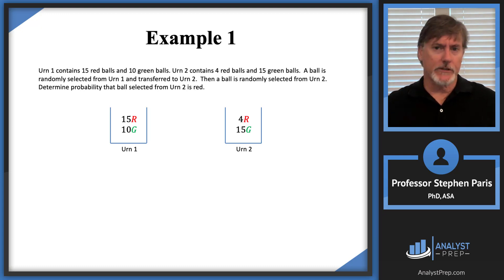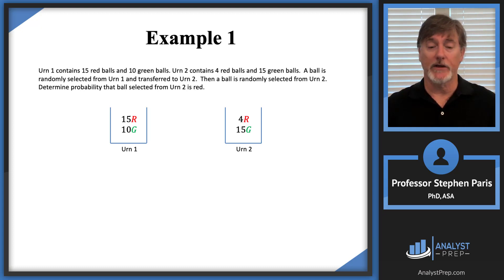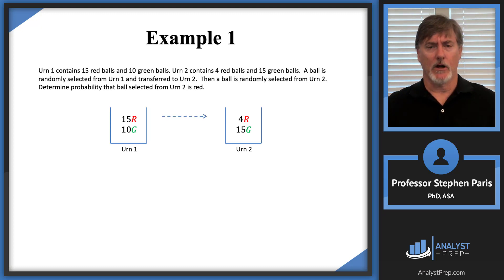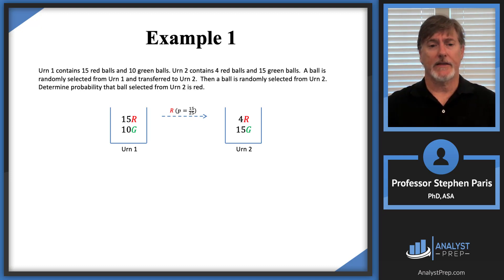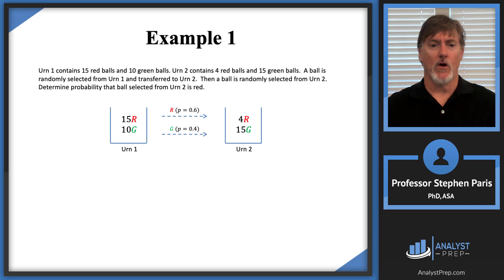Before we get into the mathematics and notation, let's just logically think through it and hopefully develop some intuition. We're going to transfer a ball from urn 1 to urn 2, and of course that ball could be red or green. The ball would be red with probability 15 out of 25 total balls in urn 1, so the probability the transferred ball is red is 15 out of 25, or 0.6. Likewise, the probability that the ball was green would be 10 out of 25, or 0.4.